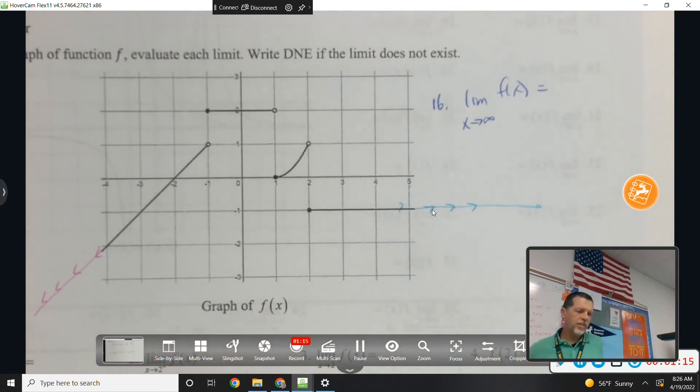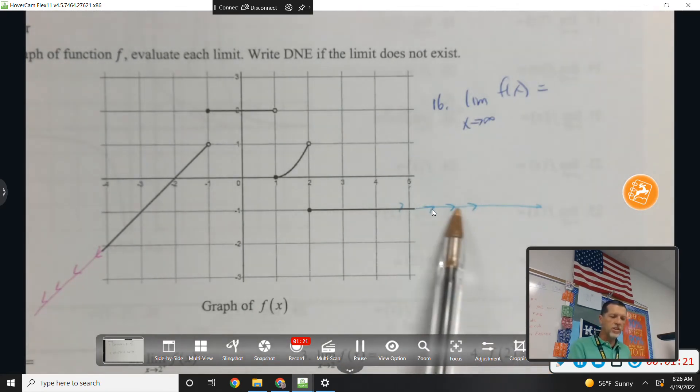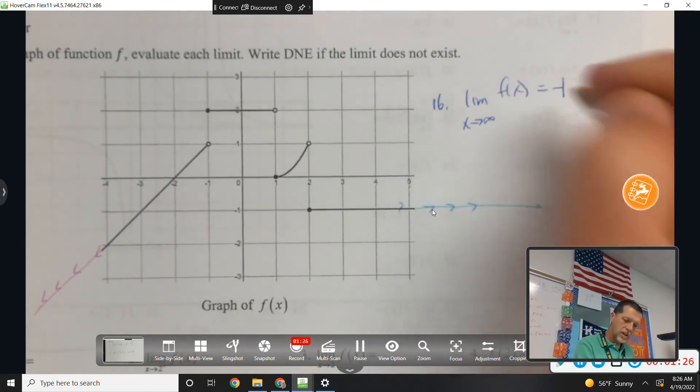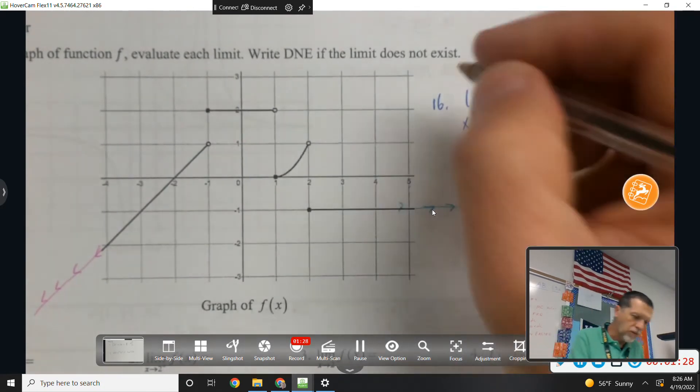So as x gets really, really, really big, our function looks like it's camped out at negative 1. 16 is negative infinity. Oh, it sure is. This was 15.